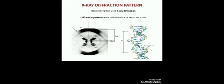Next is the X-ray diffraction pattern. At King's College London, Rosalind Franklin obtained images of DNA using X-ray crystallography. Franklin's images allowed James Watson and Crick to create their famous two-strand, or double helical, model of DNA.